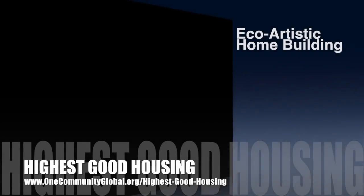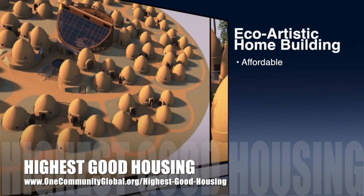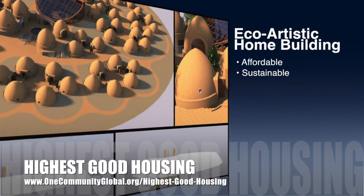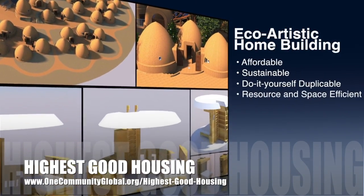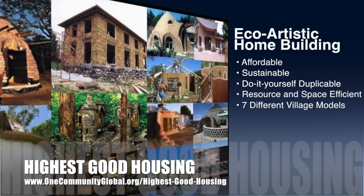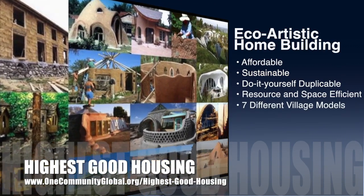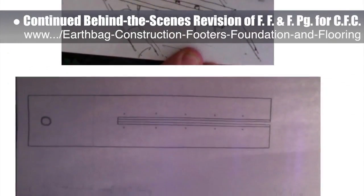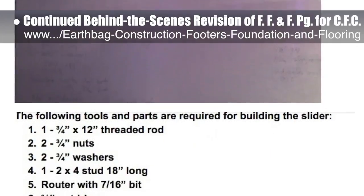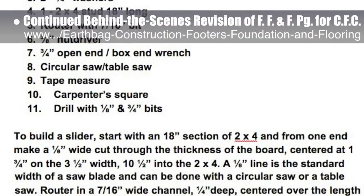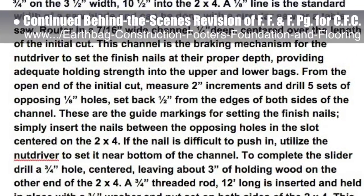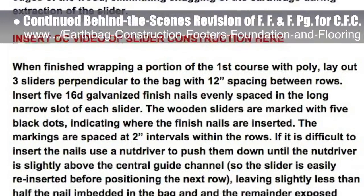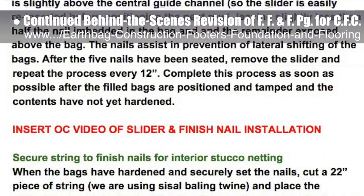One Community's approach to highest good housing is eco-artistic home building that is affordable, sustainable, do-it-yourself duplicable, resource and space efficient, and consists of seven different sustainably constructed village models. This last week, the core team put another 10 hours into the behind-the-scenes revisions for the Footers Foundation and Flooring page for the crowdfunding campaign we're developing. This week's focus was editing, rearranging sequential changes, and a new narrative for the updated version of the slider we'll be using to make building these safer and easier than other methods.